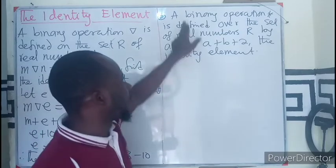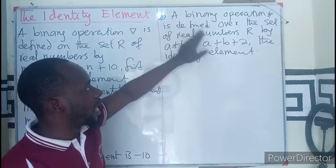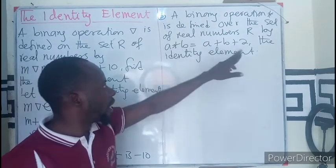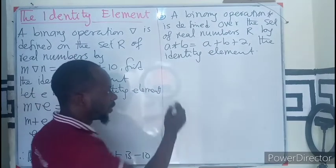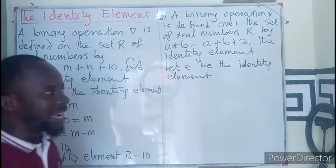So here, we also have a binary operator star. It's been defined over a set of real numbers by this definition. We have to find the identity element. If E is the identity element.